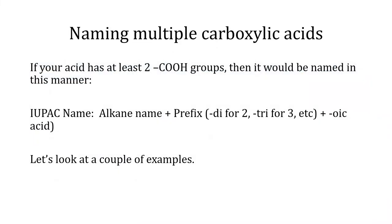Naming multiple carboxylic acids can be done in this manner. If your acid has at least two COOH groups, then it would be named under IUPAC guidelines as the name of the parent alkane, plus a prefix — di for two, tri for three, et cetera — plus OIC acid.